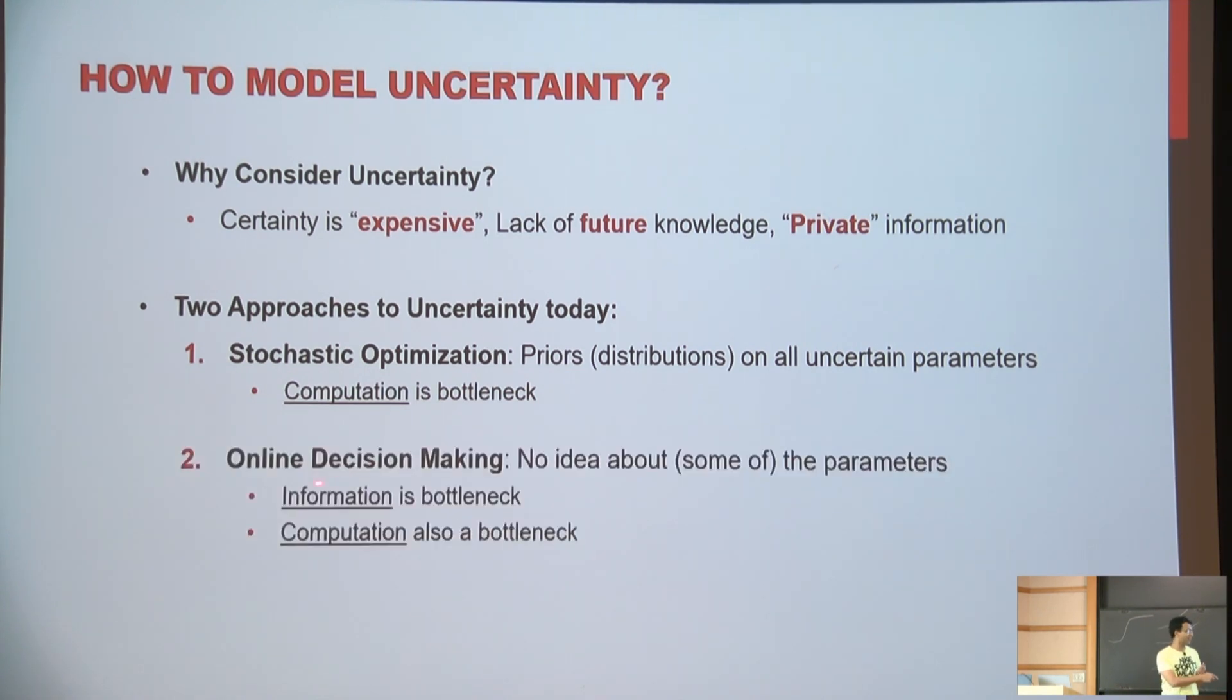But the major bottleneck is computation. The other broad approach is online decision making, where you don't know these parameters. There are some parameters for which you don't even know any distributions. You might know maybe they have some range, they're like non-negative numbers or something. But they might take very adversarial values. So here, even information could be a challenge. And of course, you still care about computation.